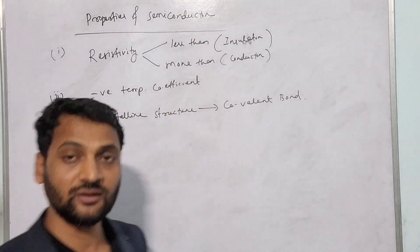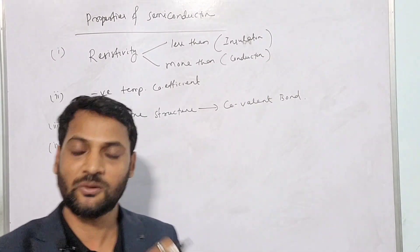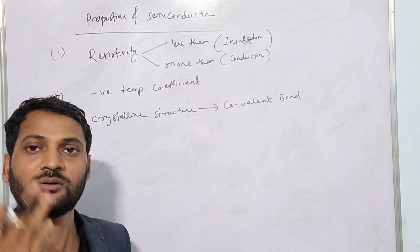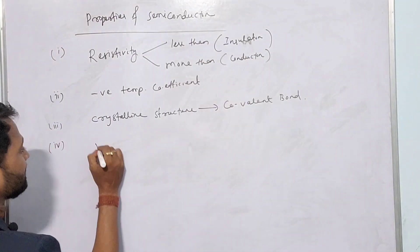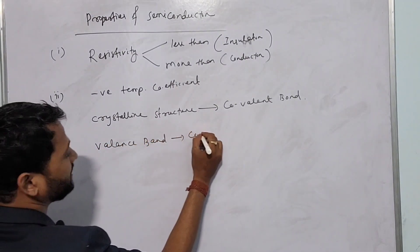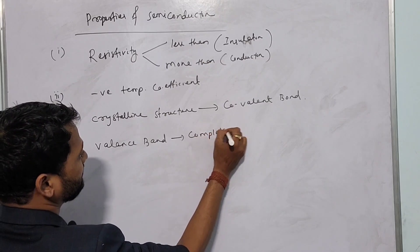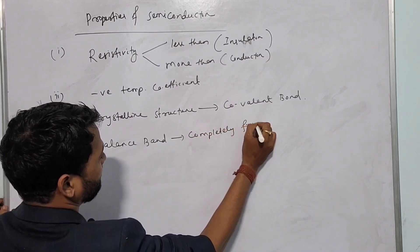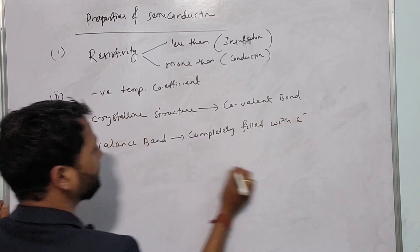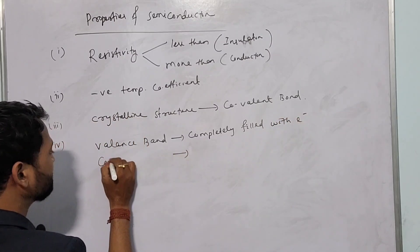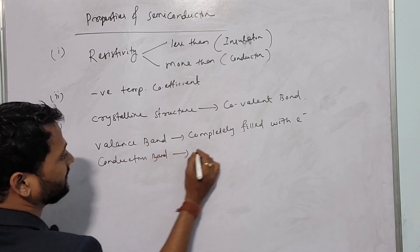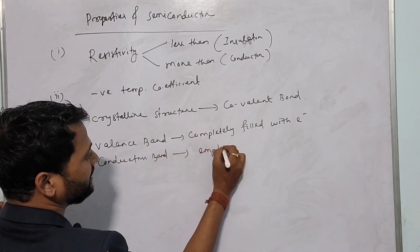The fourth point: in case of semiconductor, the valence band is completely filled with electrons and the conduction band is almost empty — valence band completely filled with electrons, conduction band nearly empty.